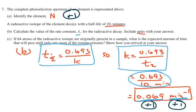Now part C: if 64 atoms of the radioactive isotope are originally present in a sample, what is the expected amount of time that will pass until only one atom of the isotope remains? Show how you arrived at your answer.